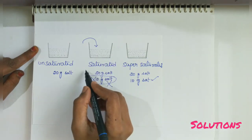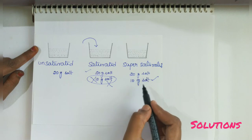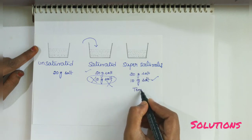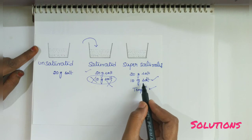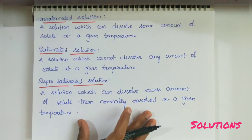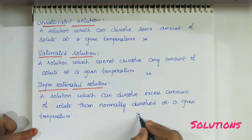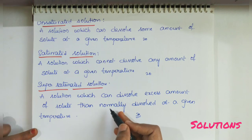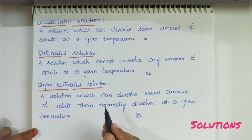This is the unsaturated solution. Here, 30 grams can be dissolved, which means the concentration of a supersaturated solution is more than the saturated solution. So this is about the topic of solutions. In the next video, we will go to methods of expressing concentration of the solution. Thank you.